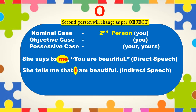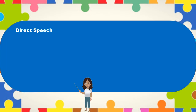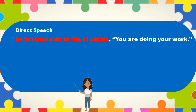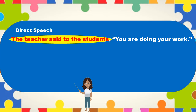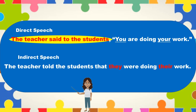Let us take one more example. The teacher said to the students, 'you are doing your work.' Here 'you' refers to the students. So 'you' and 'your' will change to 'they' and 'their.' In indirect speech it will become: the teacher told the students that they were doing their work.